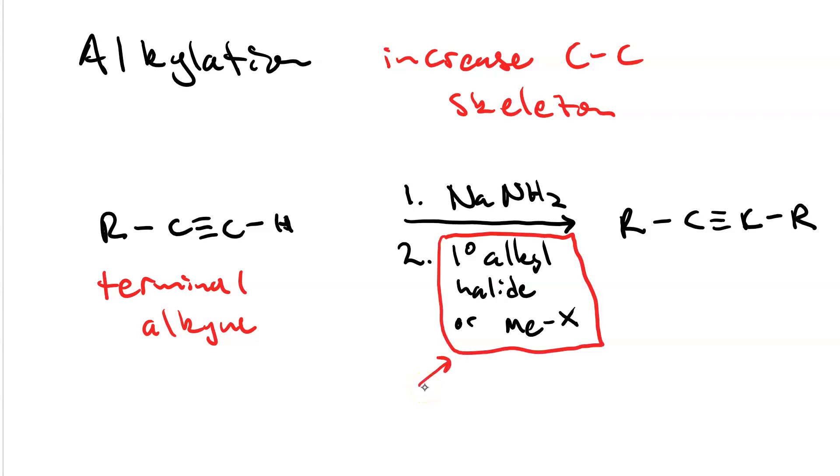It's very important that the second reagent be a primary halide or a methyl halide. If you have secondary or tertiary you won't get alkylation, what you'll get is elimination.